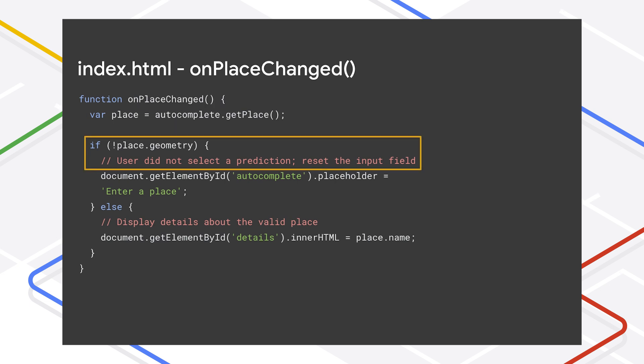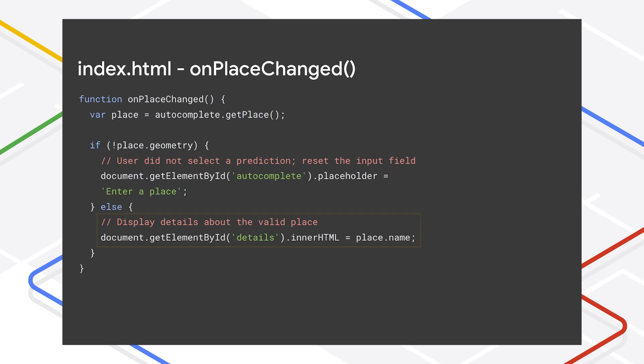Then it's a good idea to check if the resulting place has a geometry. This tests whether the user actually clicked a prediction or if they entered some text that didn't result in any predictions and pressed the enter key. Pressing enter without any predictions would trigger the place_changed event, but will not return a valid place. If we do get a valid place, we can retrieve the details about that place and display them for the user.